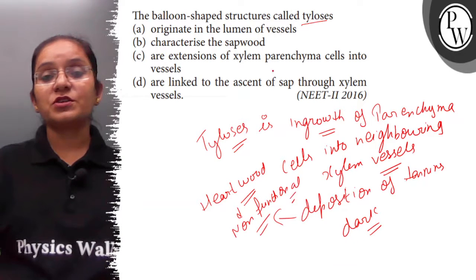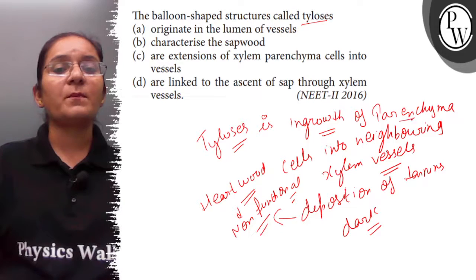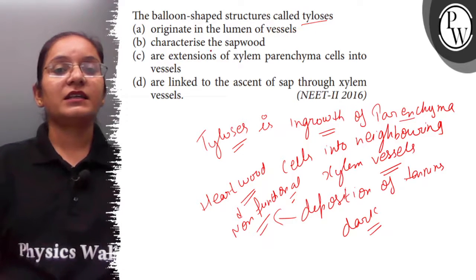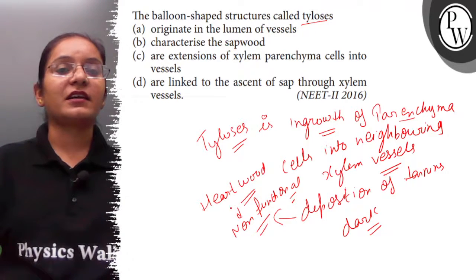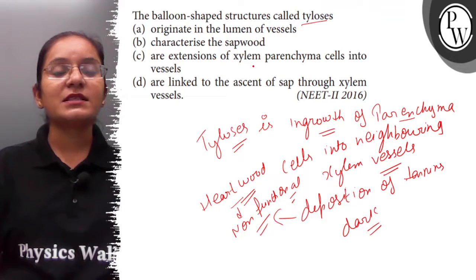So students, let's check the options. (a) Originate in the lumen of vessels - no, they originate from the parenchyma cells. (b) Characteristic of sapwood - no, it is a characteristic of heartwood. (c) Are extensions of xylem parenchyma cells into the vessels - yes.